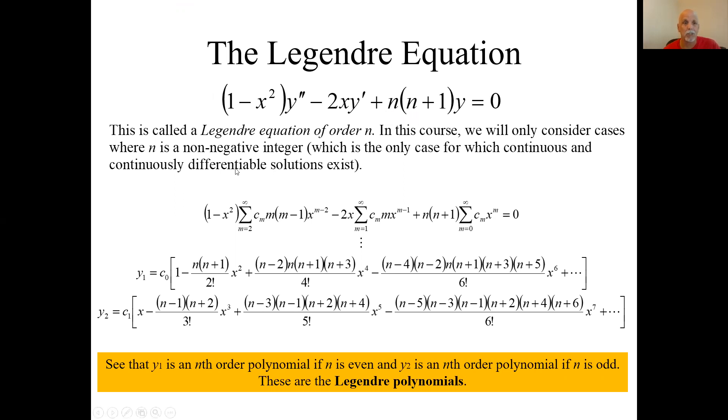Those are the only cases for which continuous and continuously differentiable solutions exist. So it's the Legendre equation of order n, where n is a non-negative integer, could be zero. It's a second order equation, homogeneous, like we've been solving before.